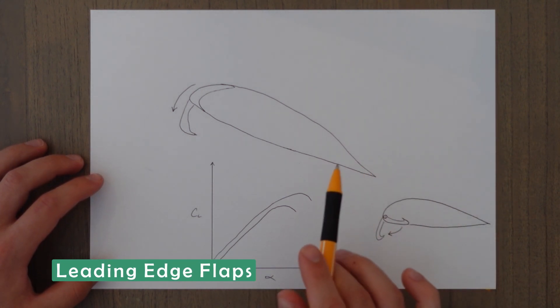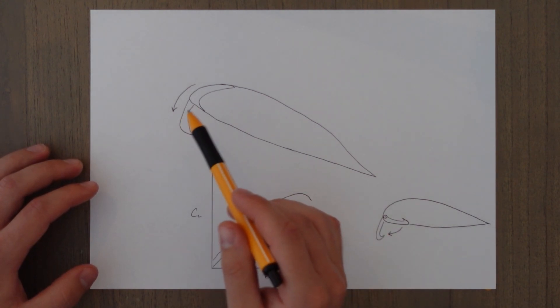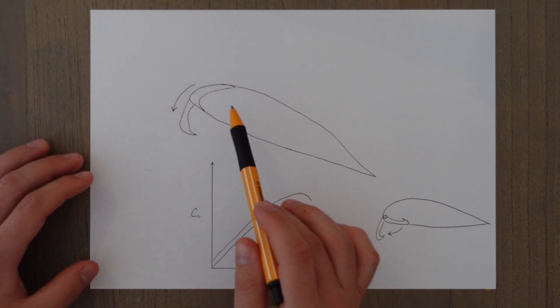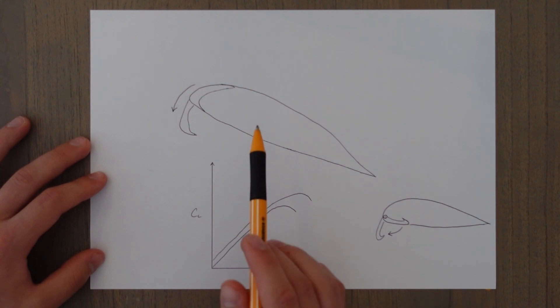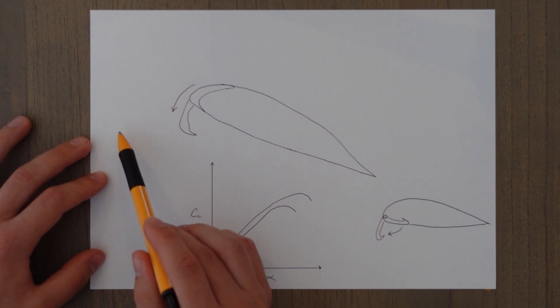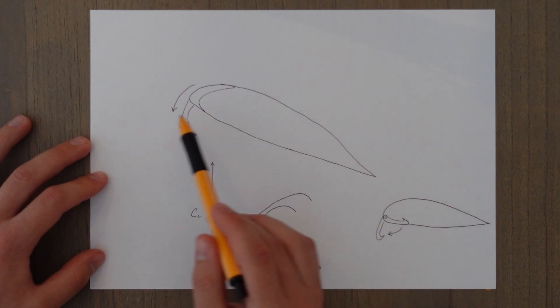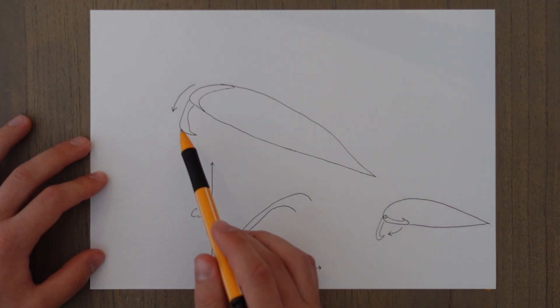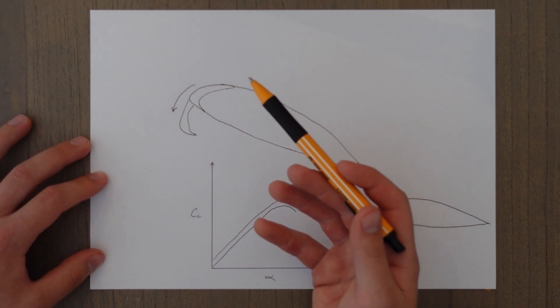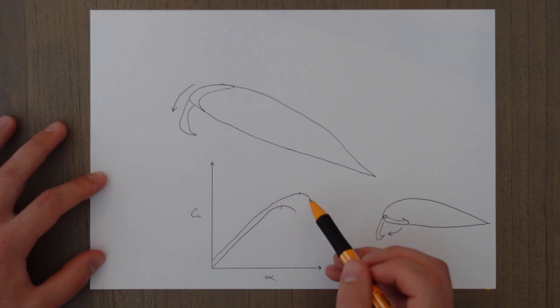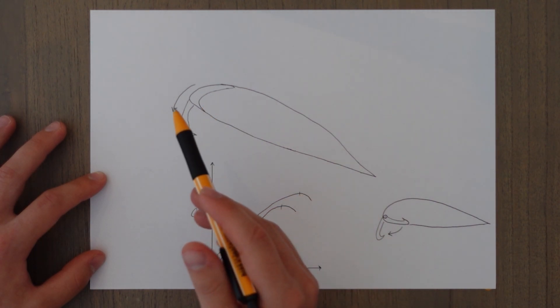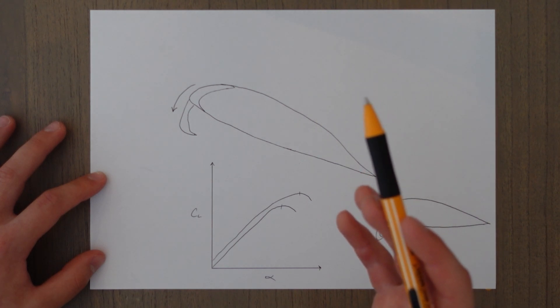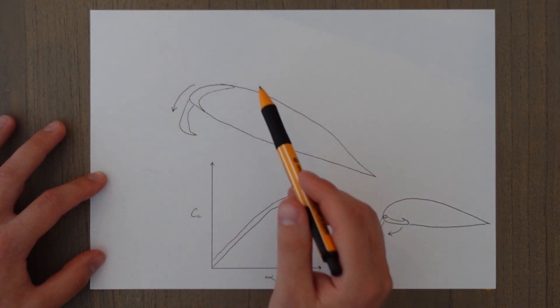Leading edge flaps operate with the same principles in mind. They increase the camber of the wing slightly but due to the position, obviously at the leading edge this time, there isn't a real big movement of the center of pressure. The additional benefit of a leading edge flap is that they essentially round off the leading edge more and make the angle the airflow has to move around less sharp and less severe which means a higher critical angle of attack can be achieved before we stall. That's what we can see here on this graph, we have a higher critical angle of attack because of this rounding off of the front edge which will push our separation points and draw less energy from the airflow in order to get around that front edge.